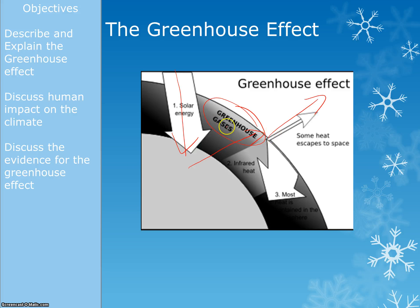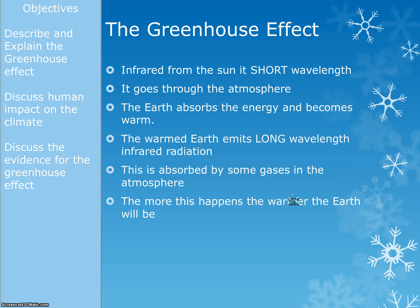A little bit escapes, but a lot gets absorbed by the greenhouse gases in the atmosphere. Once it's been absorbed, it gets ejected out — reflected in all sorts of directions — and a lot ends up coming back down to the Earth. So this infrared radiation gets trapped inside our atmosphere and warms the Earth up. To summarise in bullet points: infrared from the sun is short wavelength and goes through the atmosphere; the Earth absorbs this energy and gets warmer; the warm Earth then emits long wavelength infrared radiation, which is absorbed by some of the gases in the atmosphere. The more this happens, the warmer the Earth will get.